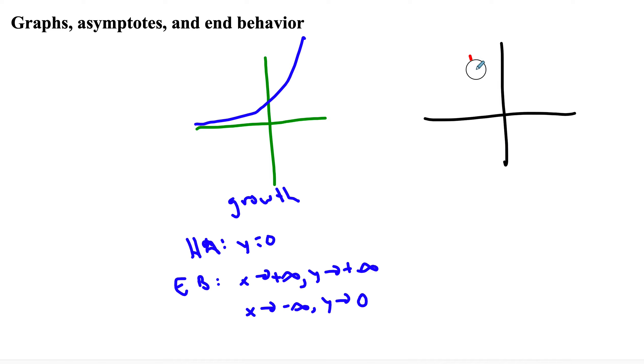Decay is similar, but kind of reversed. Still has a horizontal asymptote, y equals 0, and end behavior would be as x goes to positive infinity, the table is turned, now y is going to 0, and vice versa.